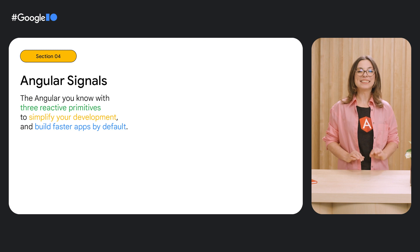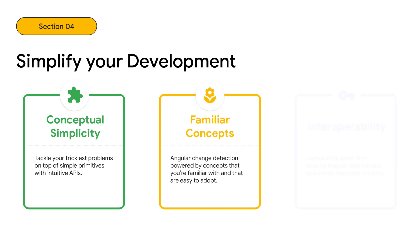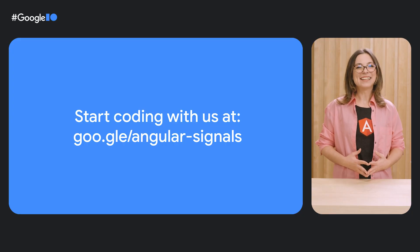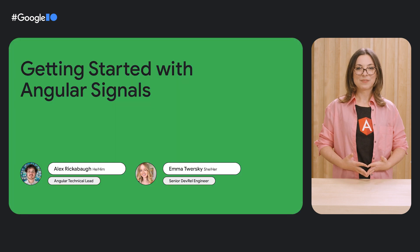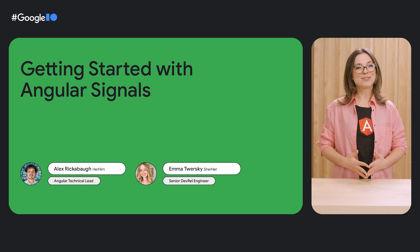Reactivity gives you three powerful yet simple primitives — signal, computed, and effect. They enable you to simplify your development with conceptual simplicity, familiar concepts, and first-class support for interoperability. You will constantly be on the optimal path to build faster apps by default with precision updates and lightweight dependencies powered by reactivity everywhere. We're excited to see what you'll build using Angular Signals. ng-update to v16 and start coding with us at the link in the description. If you're eager to start today, we just launched a workshop on getting started with Angular Signals — develop your first app powered by Angular Signals. That's my signal to wrap up. Thank you.